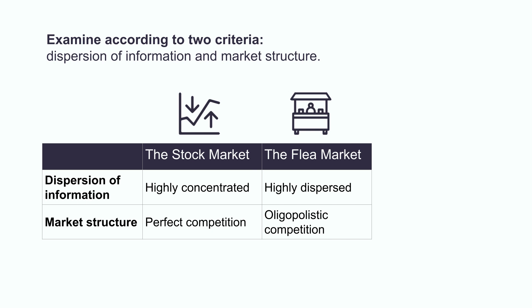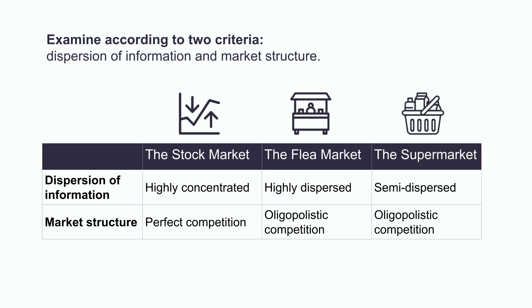The flea market? The information is highly dispersed — I need to walk over each stand and ask each seller to get prices. The market structure is oligopolistic competition, as the number of participants is limited by the size of the flea market. The supermarket? The information is semi-dispersed — I need to walk the aisles to get price information, but products will be grouped by aisle, which makes it quicker. The market structure is also oligopolistic competition, as there is a limited number of brands displayed.